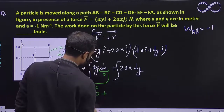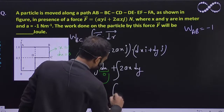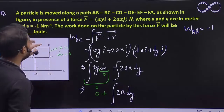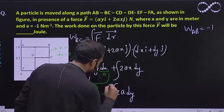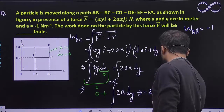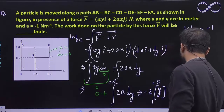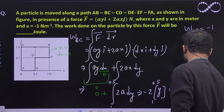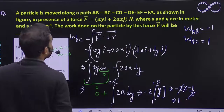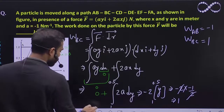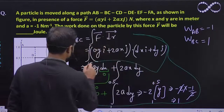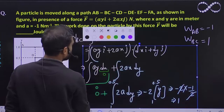So we are left with the integration of 2AX DY. The value of X is 1, and A is minus 1, so this becomes minus 2 times the integral of DY. Y is going from 1 to 0.5, so that gives minus 2 into (0.5 minus 1) = minus 2 into minus 0.5 = 1. Work done from B to C is 1.